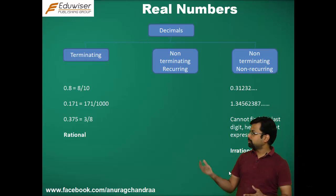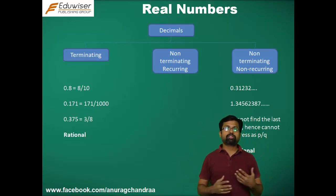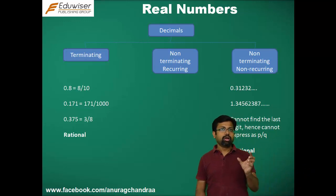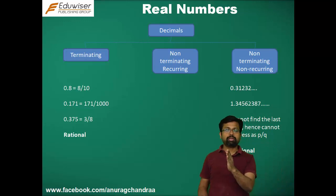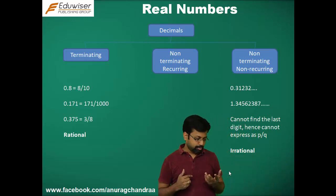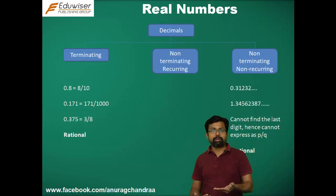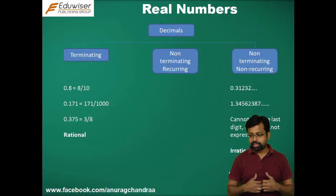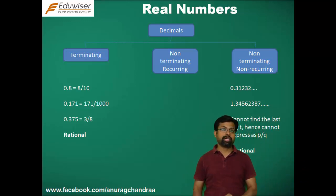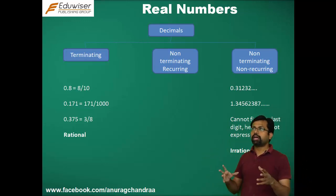For non-terminating non-recurring numbers, the digits could be like 1, 3, 1, 2, 3, 2 — you don't know what the number after that is going to be. In a terminating decimal, you always knew how many decimal places the number stopped at, so you could divide by 10 to the power of that many places. But in a non-terminating non-recurring decimal, you don't know where the number stops or what the next digit will be, so you cannot divide it by a denominator to get a fractional representation. You cannot represent it as P by Q, which means it cannot be rational — so it has to be irrational.